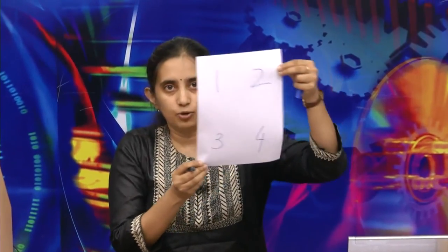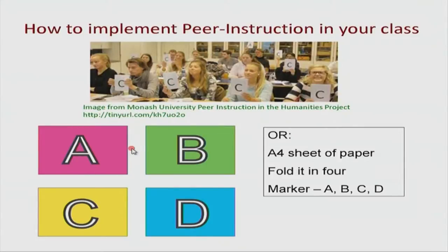Another way to implement peer instruction without clickers: take an ordinary piece of paper, write 1, 2, 3, and 4 on it, then fold it up. Each student carries a piece of paper like this. When students vote, they simply hold up the section showing what they think is the right answer — folding the paper to show their chosen option. Using sheets of paper you can do it as A, B, C, D or 1, 2, 3, 4. You don't really need clickers, but if you have them the advantage is getting a histogram of student answers right away.